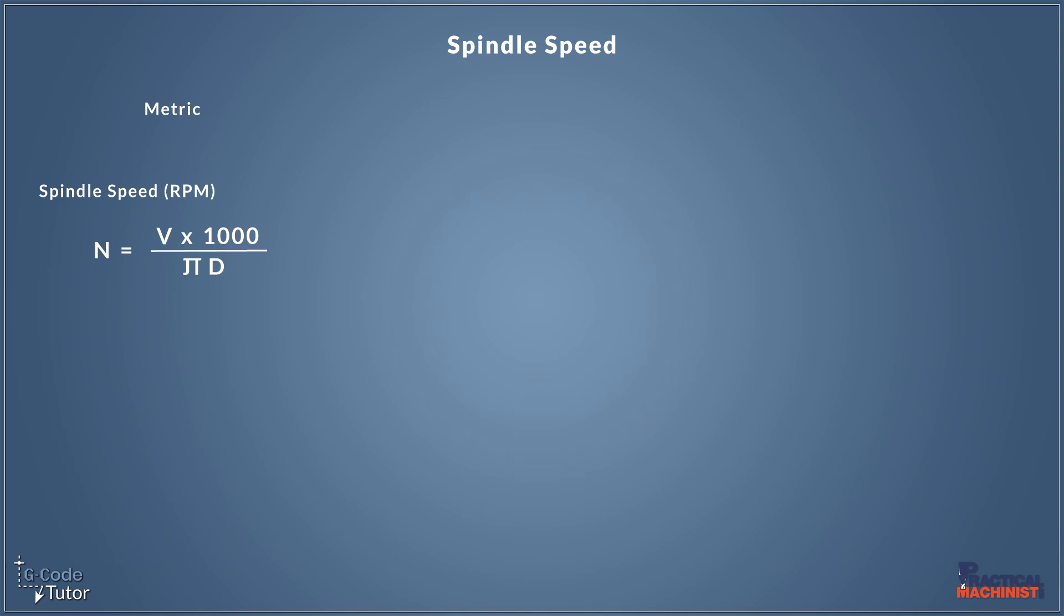Here's the equation. We have our spindle speed, N, which is calculated in revs per minute. So the N value would be equal to RPM, and we're saying that N equals V times 1000 over pi D. This is the metric version. We'll look at the imperial version in a second.